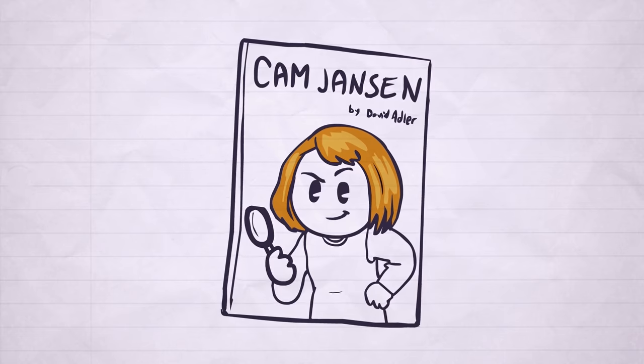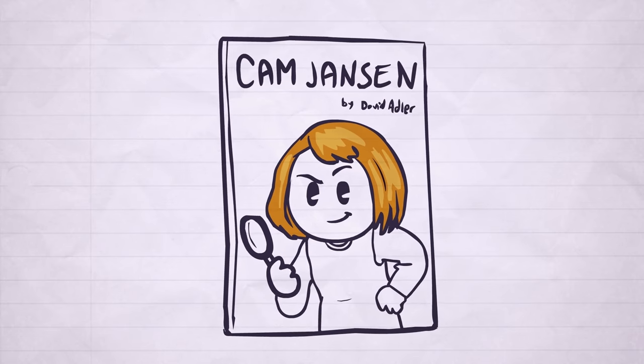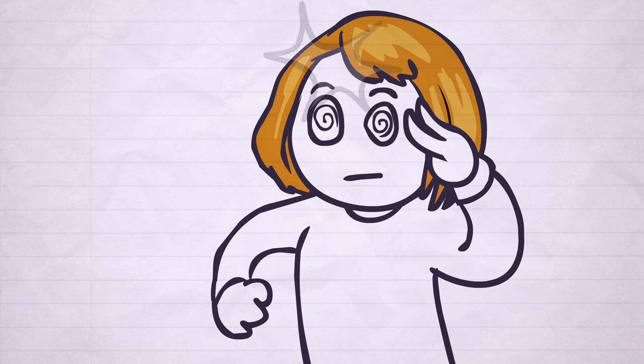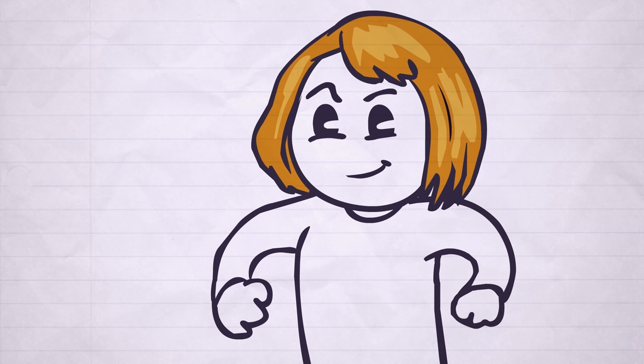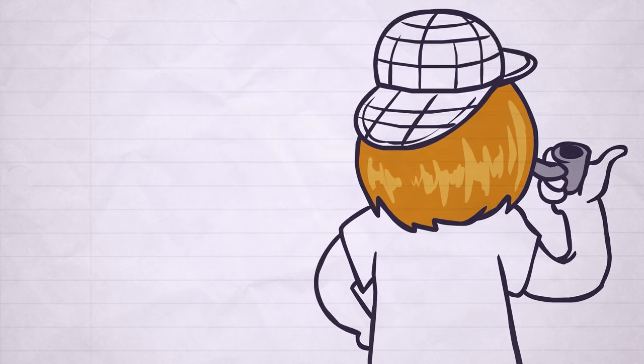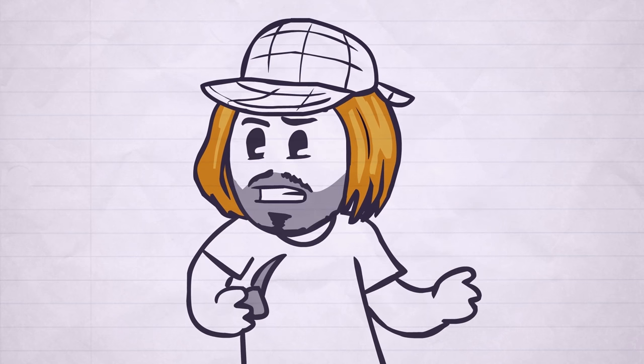Did you ever read Cam Jansen books you just made that? She was a girl detective who her mind was like a camera and she would blink and she would make a sound like a camera taking a picture and she would remember. Hold on, she'd make that sound with her mouth? Yeah. So she was a respected detective? No, no, she was a child.